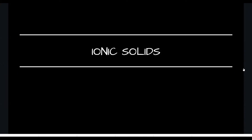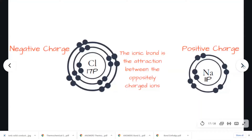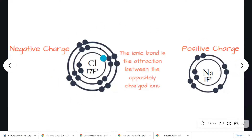In this lesson we are going to look at ionic solids and their properties in more detail. Ionic solids form when metals and non-metals react to gain a full outer shell. The metal gives its valence electron to the non-metal, leaving it positively charged, and the non-metal is left negatively charged as it has gained extra electrons.